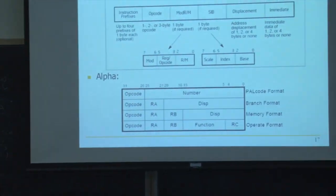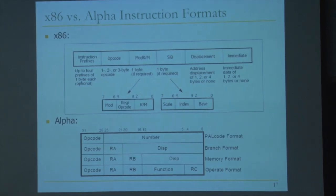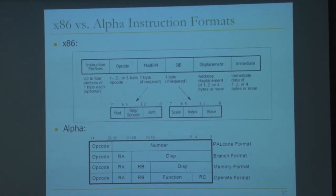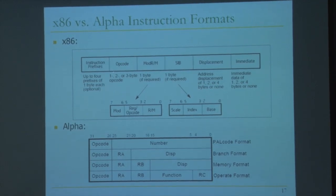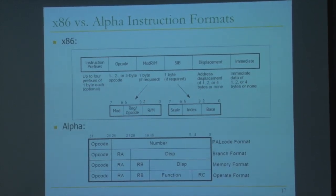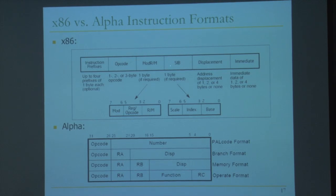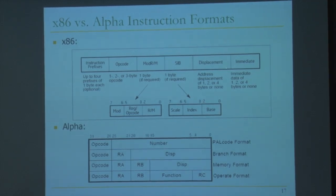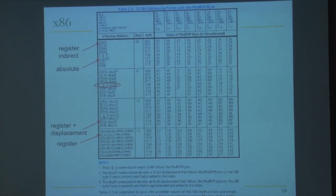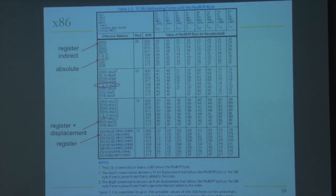Let's look at some addressing modes in x86. The opcode and prefixes specify which addressing modes are used. The mod RM byte — mod register memory — along with the SIB byte (scale index base) and displacement determine the addressing mode. For example, if the mod RM byte is 00/000, the effective address is EAX (register index mode). If mod RM is 00/101, the address is a 32-bit absolute displacement. If mod RM is 01/100, an SIB byte follows.